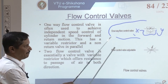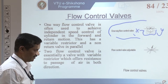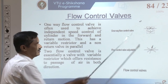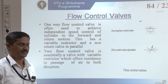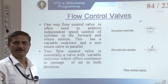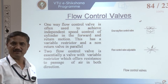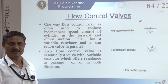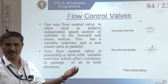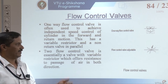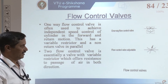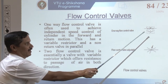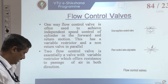Apart from these two basic types, there are other flow control valves available: one is pressure-compensated flow control valves and the other is temperature-compensated flow control valves. We will see these one by one in later sections. Let me start with the conventional basic bi-directional flow control valve and one-way flow control valve first.